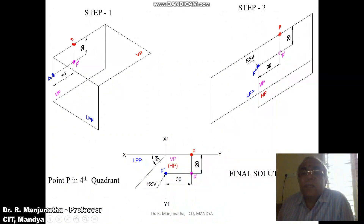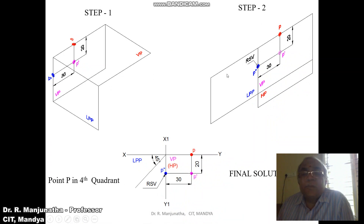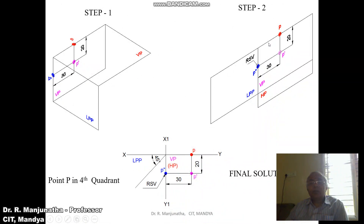Measure 30mm from this line and draw a vertical projector. The distance below HP can be seen in VP, so that point is p-dash. The distance with respect to the profile plane of 30mm can be seen in VP and also on HP, so you get this point directly. Since point p is on VP, it should also be on HP, so you get small p. Drawing a horizontal projector and also from the horizontal projection of VP, both will intersect at a point — you get p-double-dash. Since the point is in front of VP, this is the right side view.